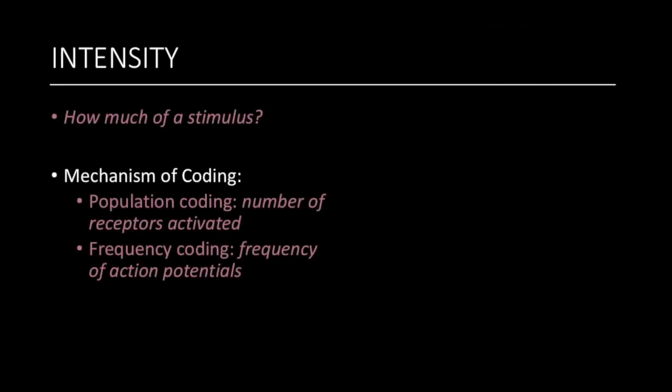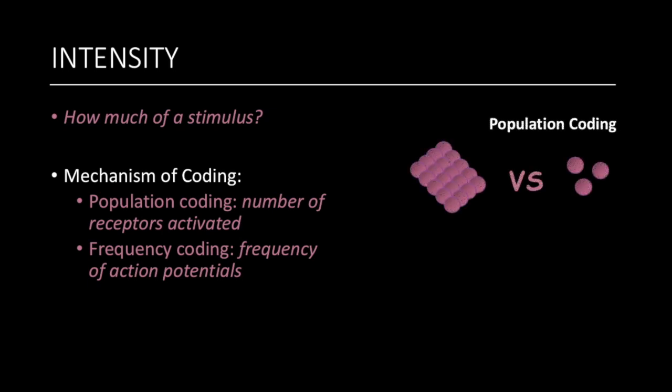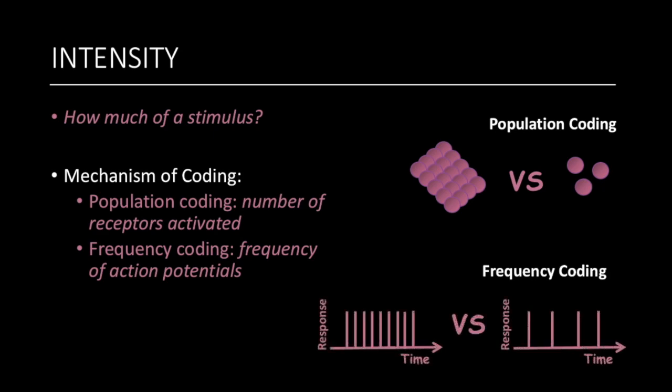The intensity of a stimulus can be coded in two ways. First, intensity depends on the number of receptors activated, and this is referred to as population coding. Second, intensity also depends on the frequency of action potentials produced by the receptors, and this is called frequency coding.